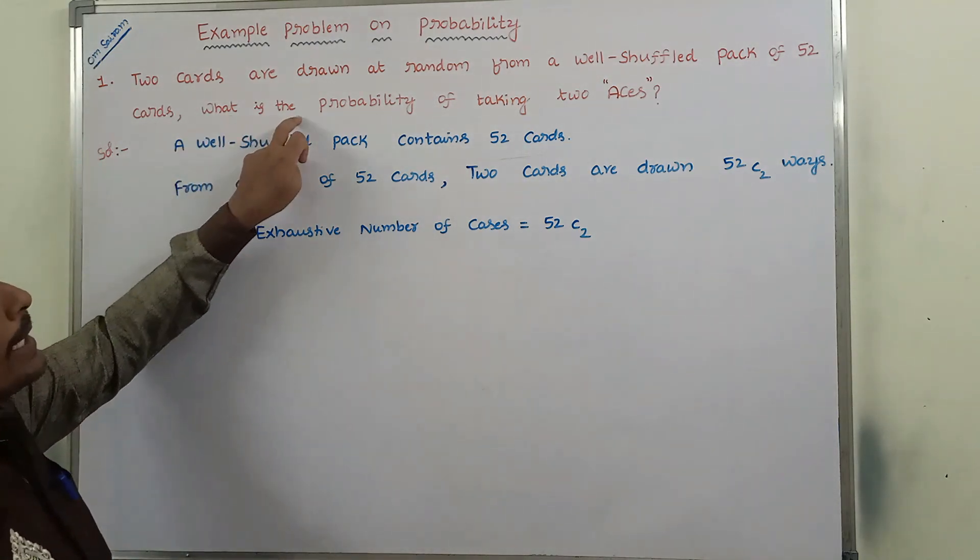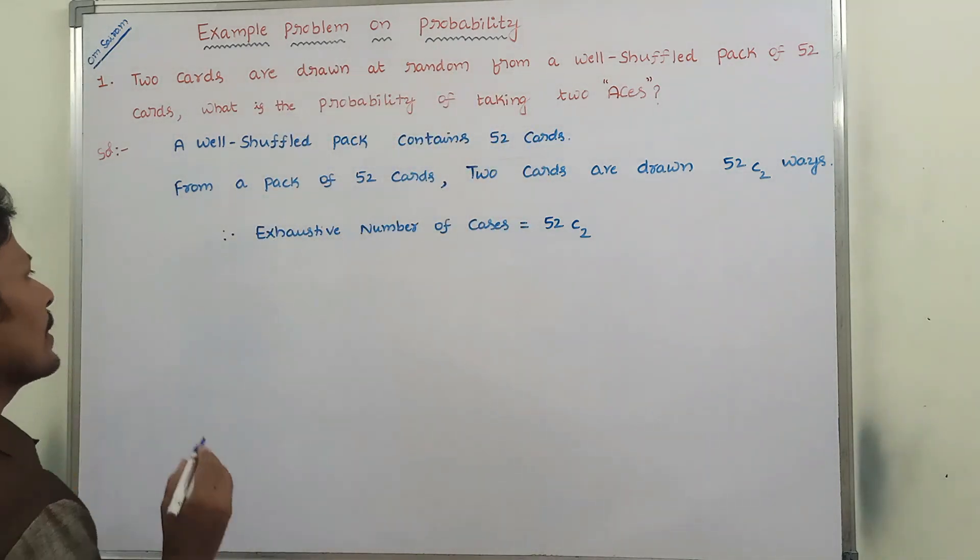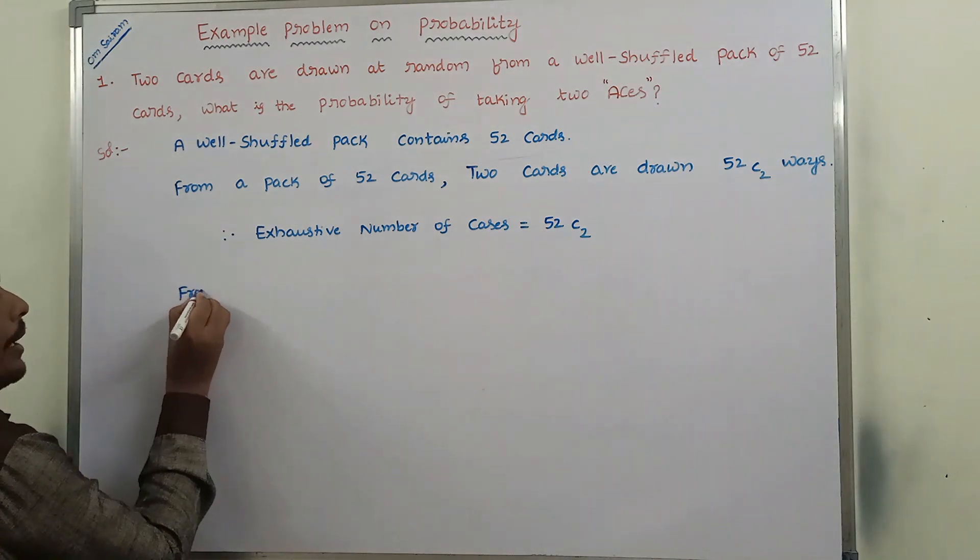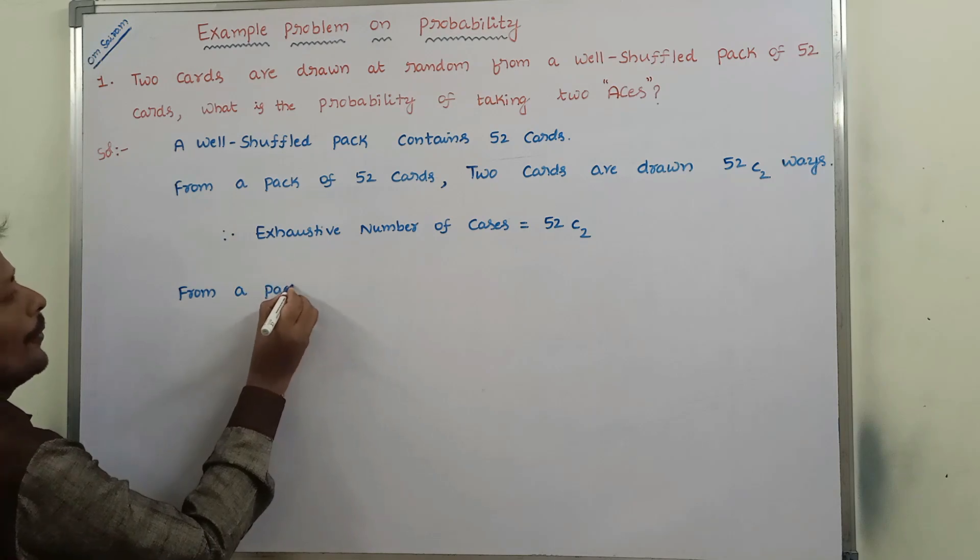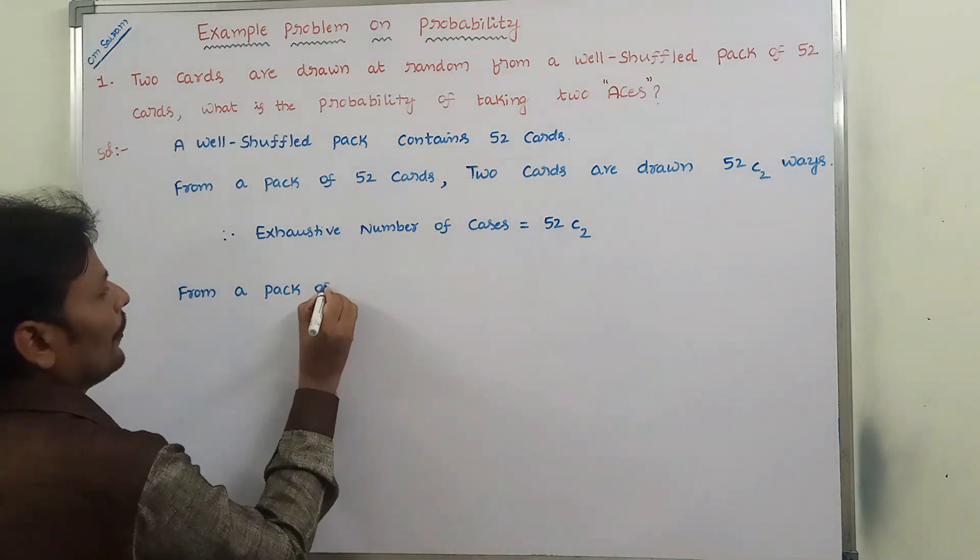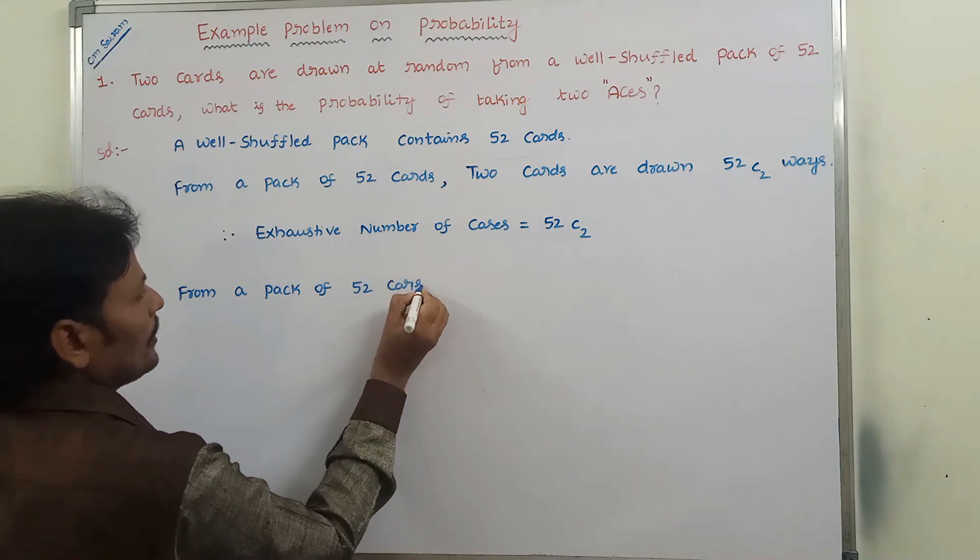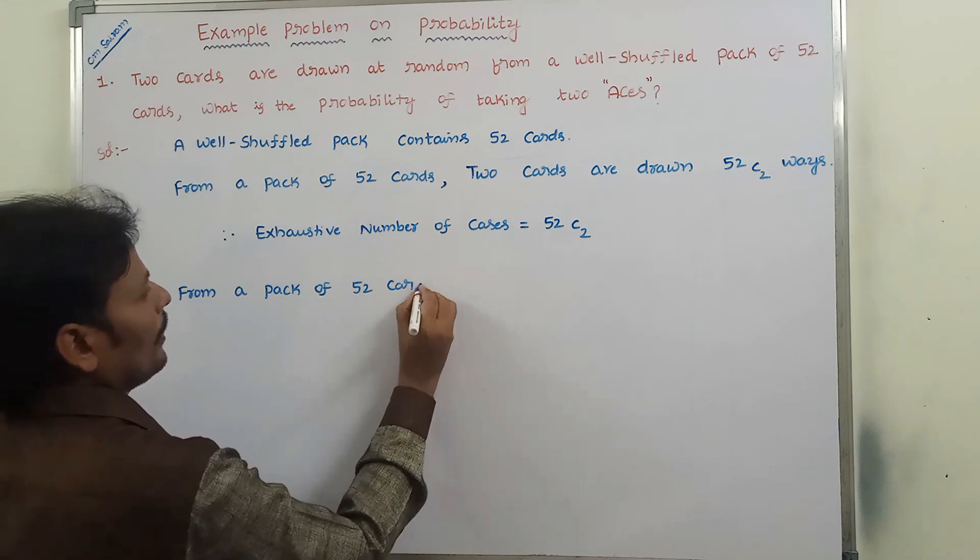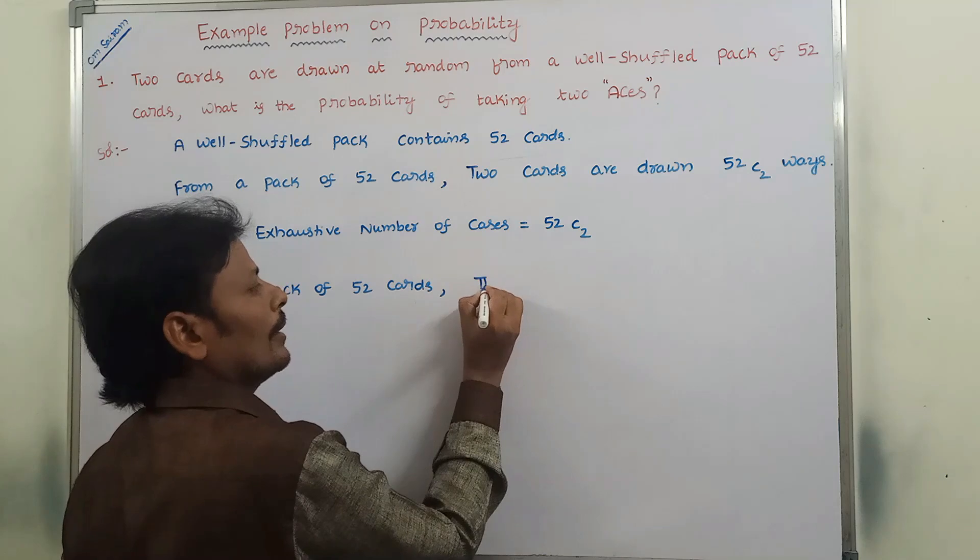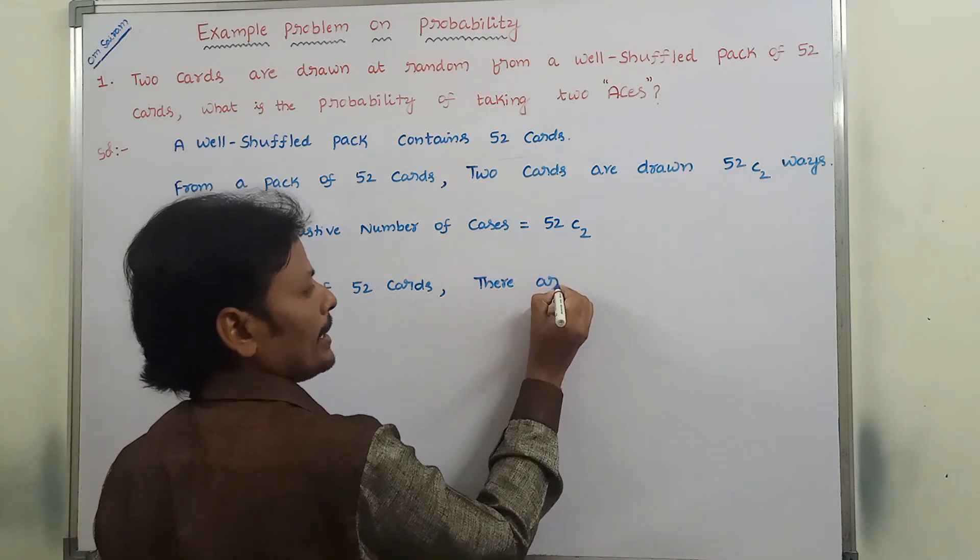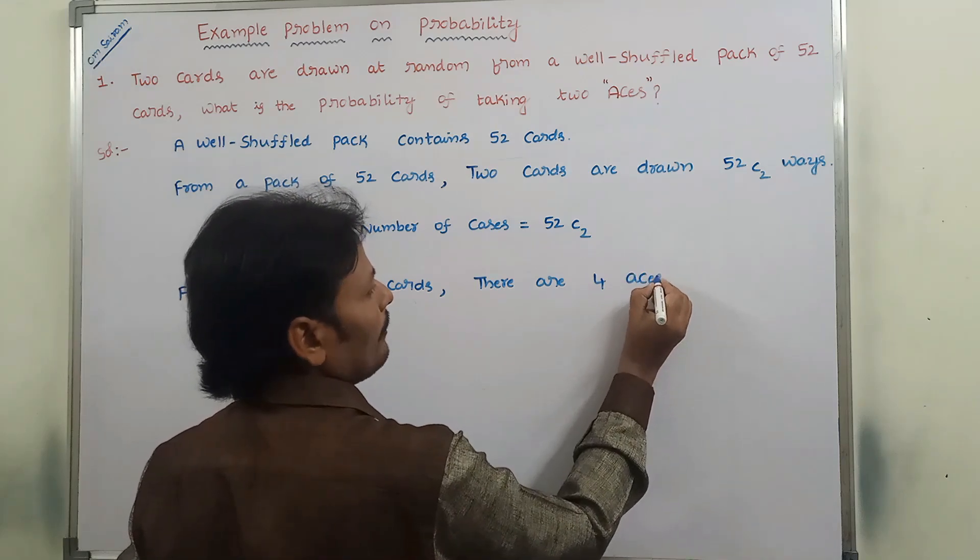What is the probability of taking two aces? That means, from a pack of 52 cards, there are four aces available.